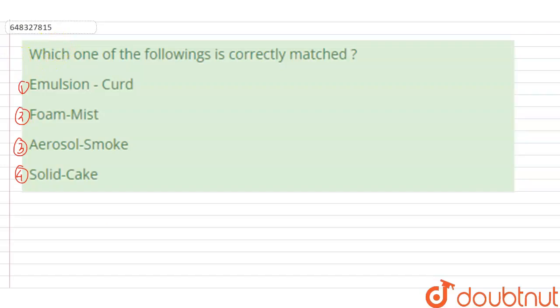Hello everyone, so the question is which of the following is correctly matched? Emulsion-Curd, Foam-Mist, Aerosol-Smoke, Solid-Cake. So first of all we have to understand what the question is asking. The question is asking about the colloids and its examples. So we will get to know about the dispersed phase and dispersion medium.